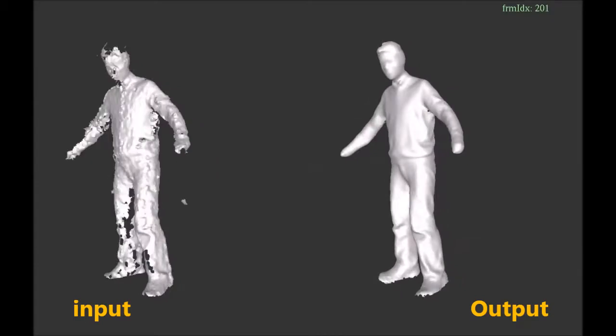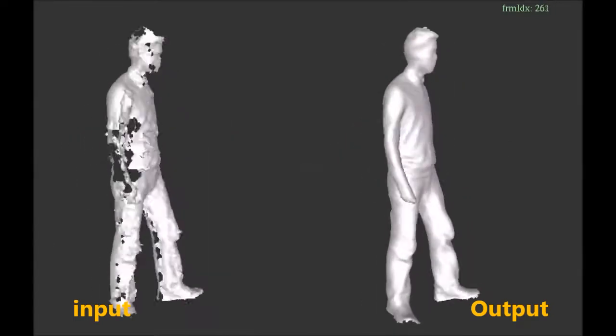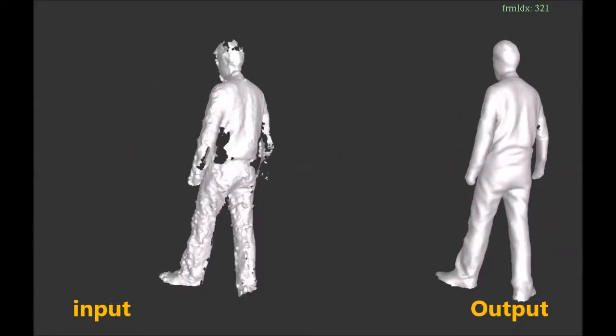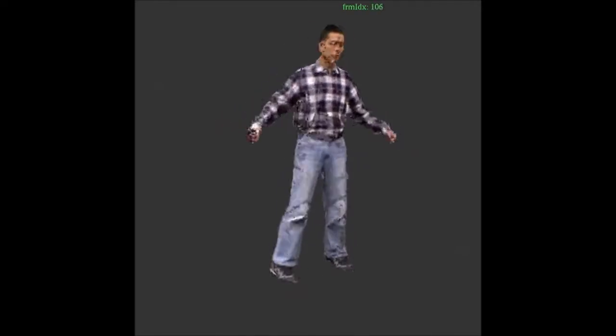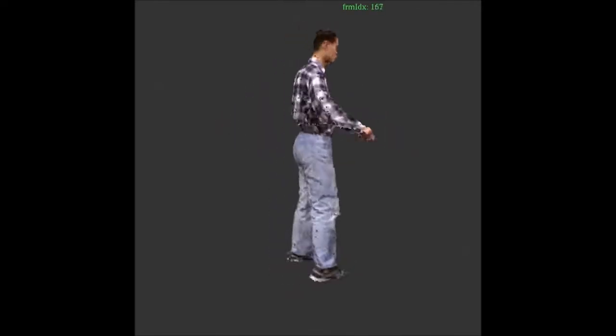In this work, we design a system to improve the 3D model of dynamic objects by using temporal information. First, we fused a sequence of data captured by depth and color cameras to get a complete and accurate model.